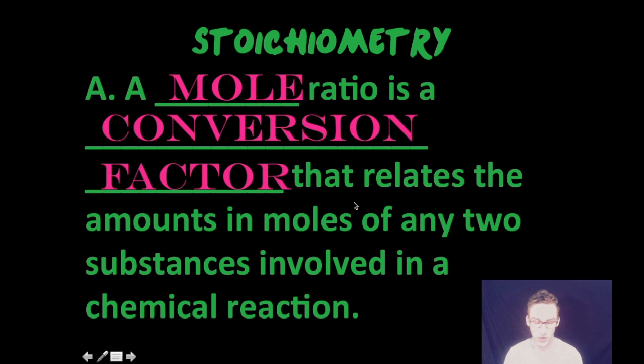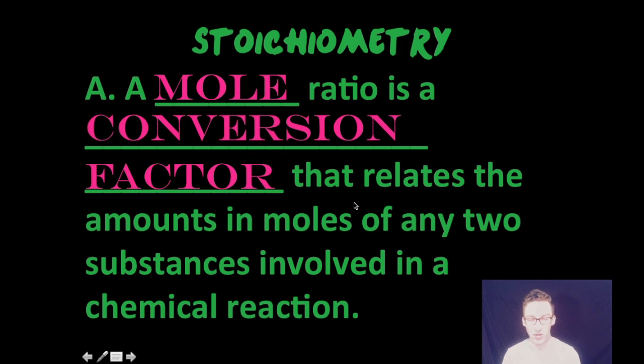Now once you know the relationship in terms of the number of moles of your reactants and products based on your balanced chemical equation, you can write what are known as mole ratios or the relationships between the reactants and the products in your chemical equation. We can use those then to write what are known as conversion factors that relate the amounts in moles of any two of the substances involved in a chemical reaction.